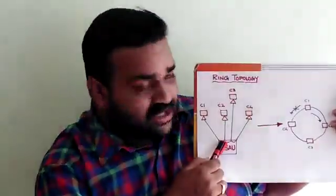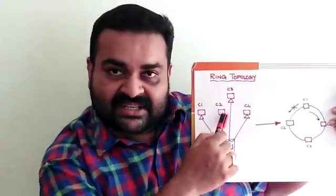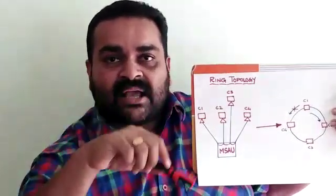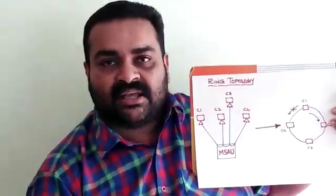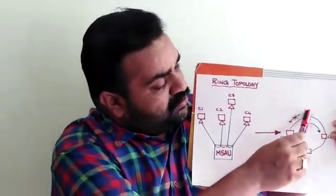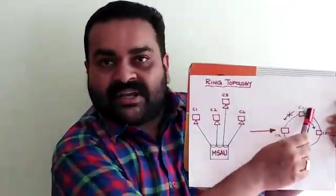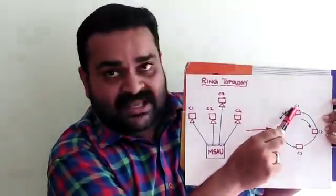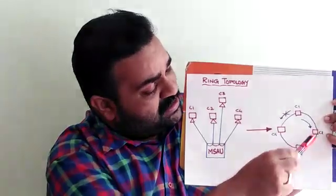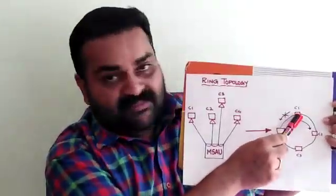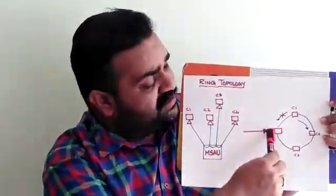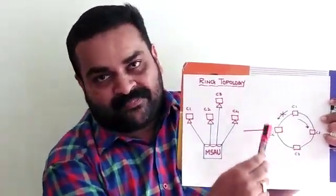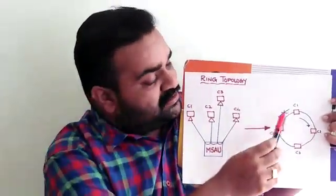In ring topology, communication passes to the next machine — C2 will receive and forward the signal through every machine, completing the ring network. C1 communicates to C2, then C4, using the ring. A drawback is that if one machine fails, the entire network is affected, which is a significant downtime issue.